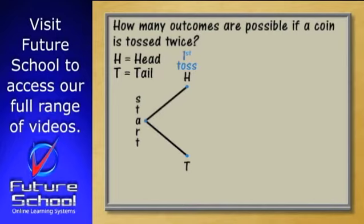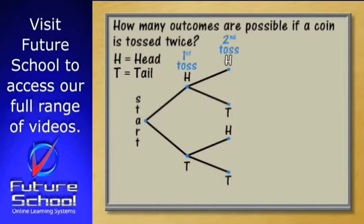The next part of the tree shows what happens as a result of the second toss of the coin. Notice that we have four branches. A head, tail, head and tail appear at the end of these four branches.